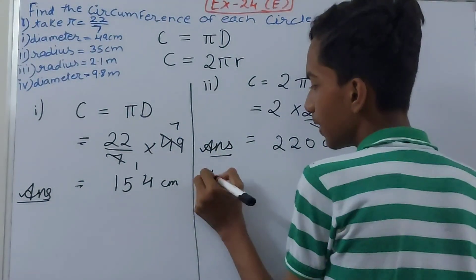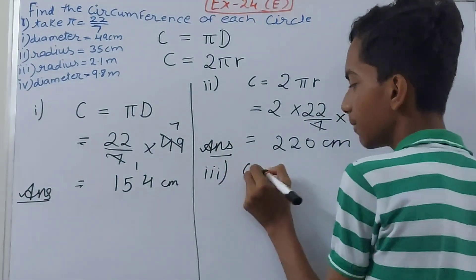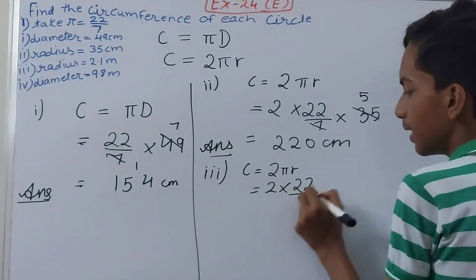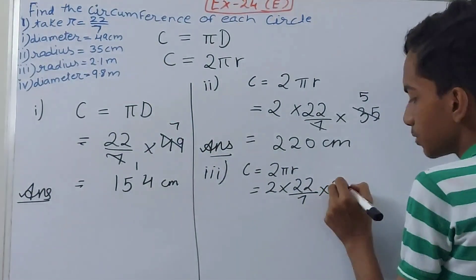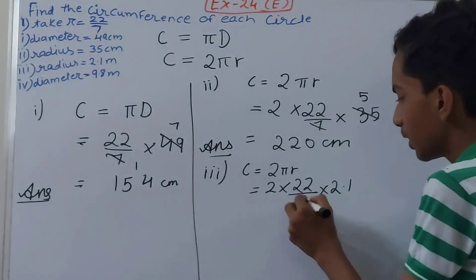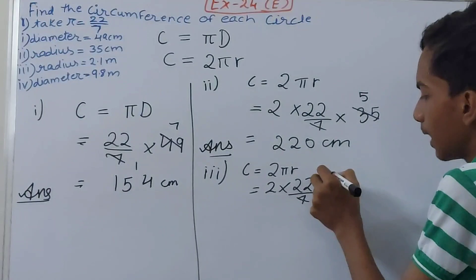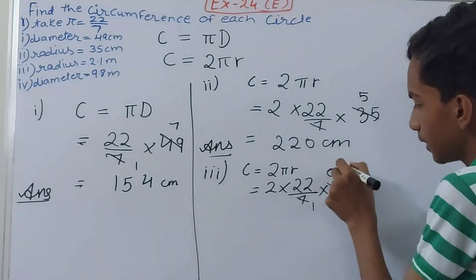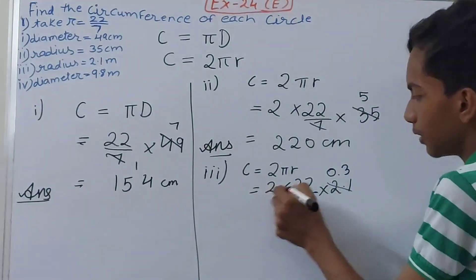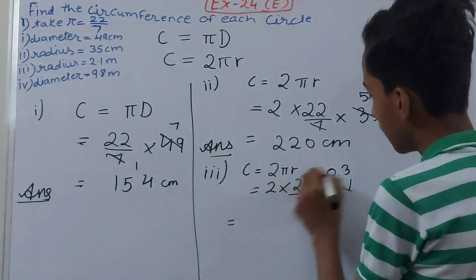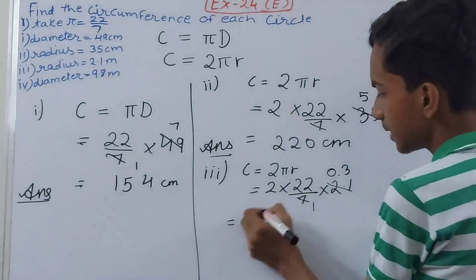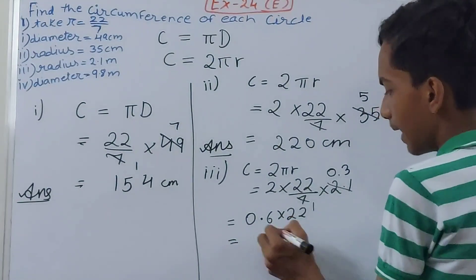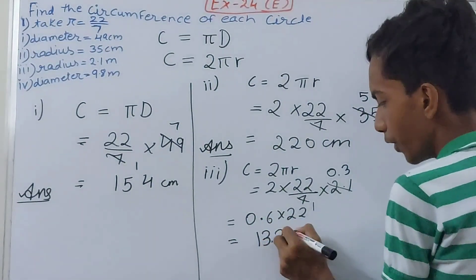Third one: radius is given again, so we use C = 2πr. Circumference equals 2 into (22/7) into 2.1 metres. Cancelling 7 and 2.1 gives 0.3, then 2 into 0.3 is 0.6, and 0.6 into 22 gives 13.2 metres. That is our answer for the third part.